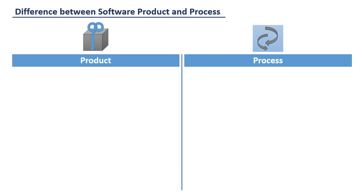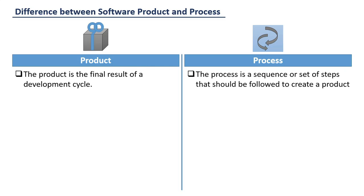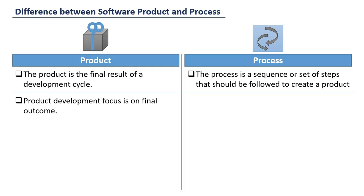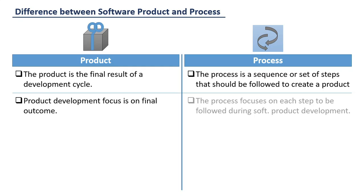Now, let us understand some of the important differences between product and process. The first difference is the product is the final result of a development cycle, while the process is a sequence or set of steps that should be followed to create a product. The second difference is that product development focuses on the final outcome, while the process focuses on each step to be followed during software product development.